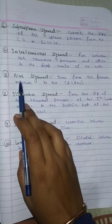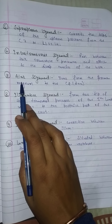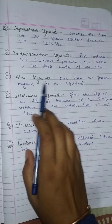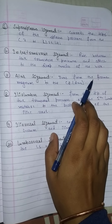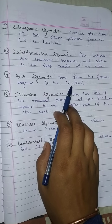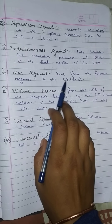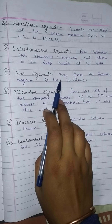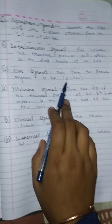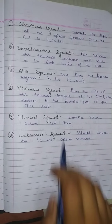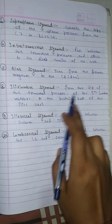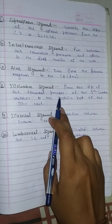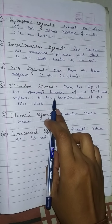The Alar Ligament is an important ligament because it limits the rotation of the head. It runs from the foramen magnum of the skull to the dens of C2.